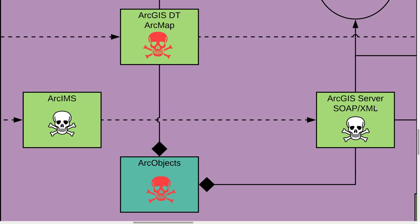ArcGIS Desktop was definitely meant to replace ArcView and ArcInfo, but I've already labeled it with a walker symbol — it's kind of on its last legs. ArcGIS Desktop is built with something called ArcObjects. You could code in ArcObjects and build extensions, or build standalone applications using the same objects that ArcMap and ArcCatalog use. Those same objects were also used to build ArcGIS Server, which is a product still in use today that eventually replaces Arc IMS.